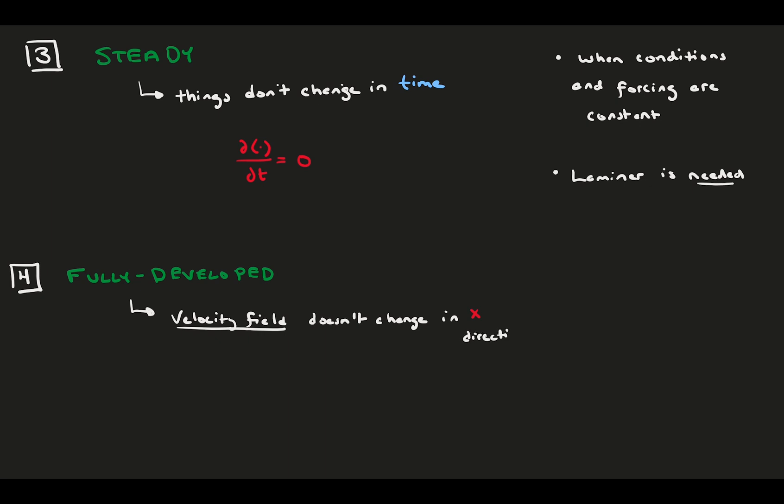This assumption only applies to the velocity field, so derivatives of velocity with respect to x are zero. It is possible with the fully developed assumption to have a pressure that changes in time. It's quite common for pressure-driven flow, where there is a pressure gradient dp dx, but the flow itself is fully developed and not changing in the x direction.